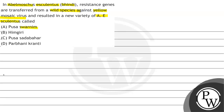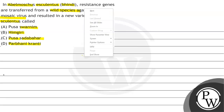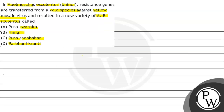Option B: Himgiri. Option C: Pousasadabaha. Option D: Parbhani Kranti. Our question is asking that in Abelmoscus esculentus, i.e., bhindi, resistant genes were transferred from a wild species against yellow mosaic virus.